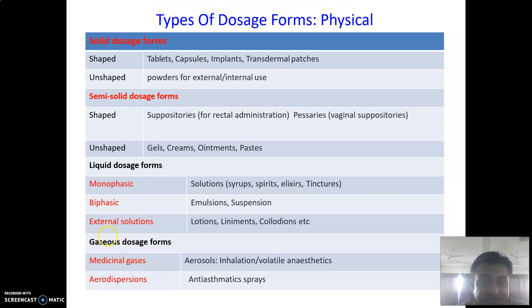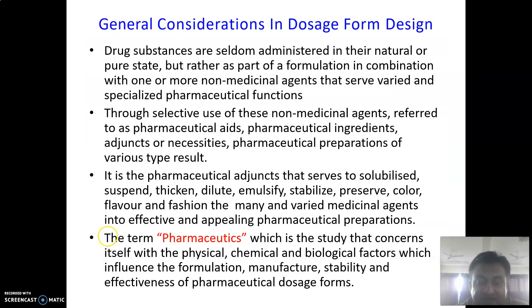Based on physical form: solids can be shaped (like suppositories) or unshaped. Semi-solids include gels, creams, ointments, and jellies. Liquids include monophasic forms like solutions (where the drug completely dissolves) and biphasic dispersions. Gaseous dosage forms include medical gases such as volatile anesthetics and aerosol dispersions used for asthmatic patients.